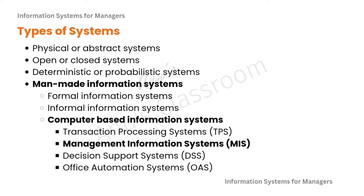There are further classifications for computer-based information systems like transaction processing system, management information system, decision support system, and office automation system. We will be talking about each of these different systems in upcoming videos, but for this video, we will be talking about the management information system or MIS.